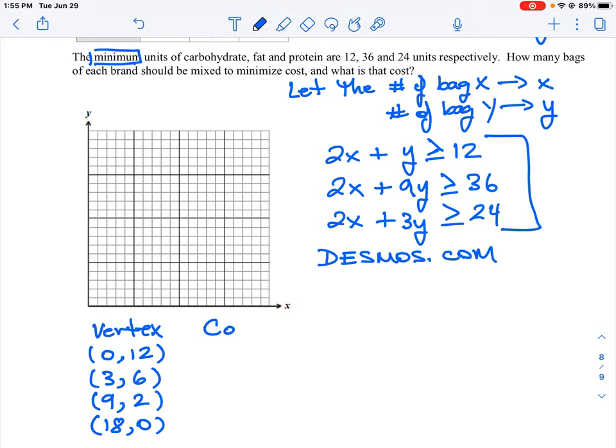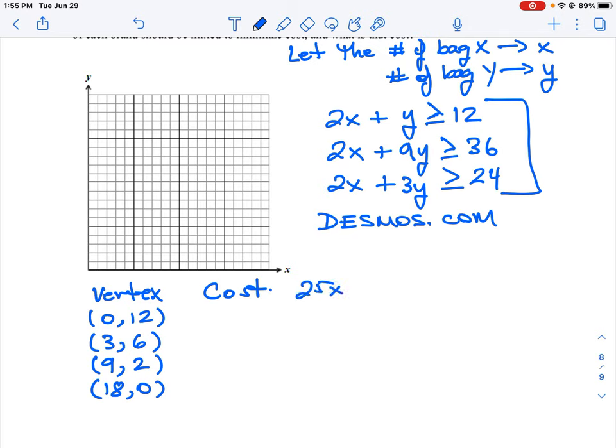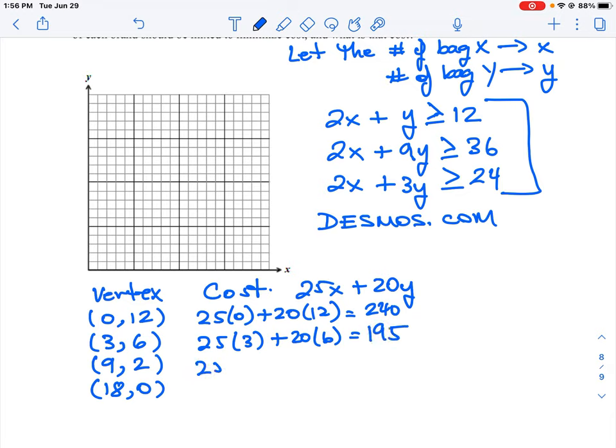Now all we have to do is figure out what our cost is. So we know our cost equation was 25x plus 20y. So what would our costs be for each pair of coordinates here? So 0 and 12 is going to give us 25 times 0 plus 20 times 12. So that is going to give us 240, because the 0 goes away. The next one here is 25 times 3 plus 20 times 6. So that's going to be 75 and 120, which is going to give us 195. And then 25 times 9 plus 20 times 2, and that is going to give us 265. And then 25 times 18 plus 20 times 0, and that is going to give us 450.